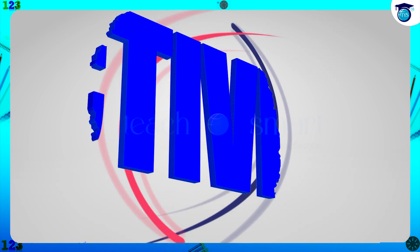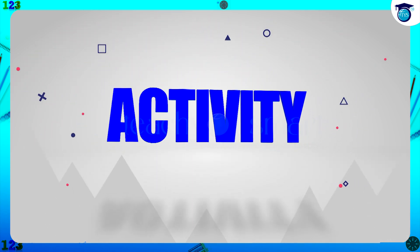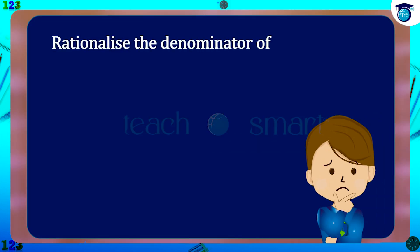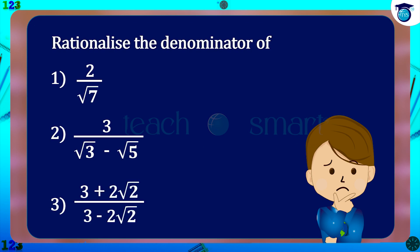Before winding up, let's check how much you understood by doing an activity. Rationalize the denominator of: first, 2 by √7; second, 3 divided by (√3 − √5); third, (3 + 2√2) divided by (3 − 2√2). That's all for now. See you all in the next class.